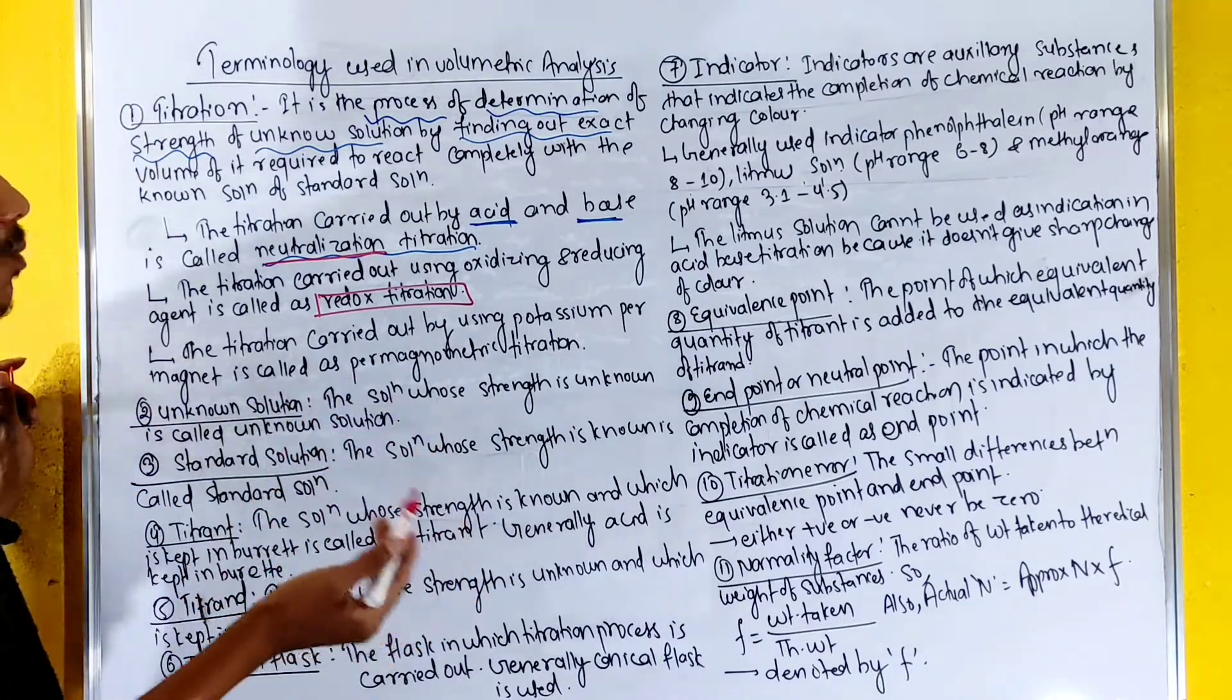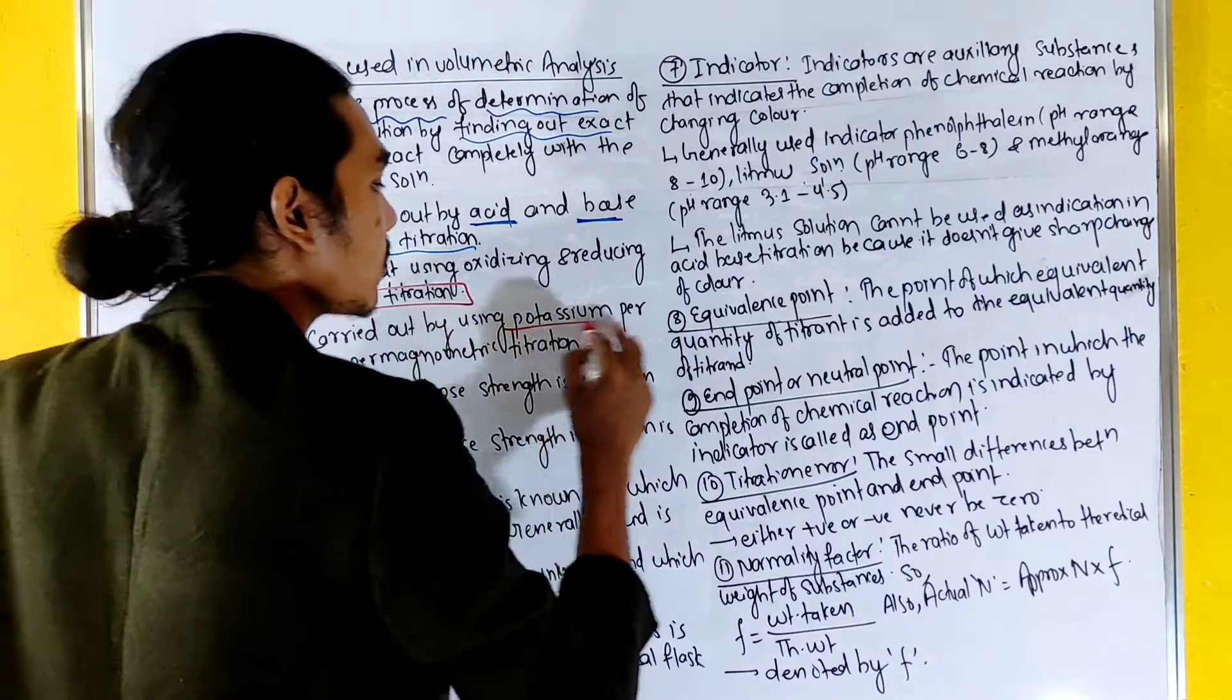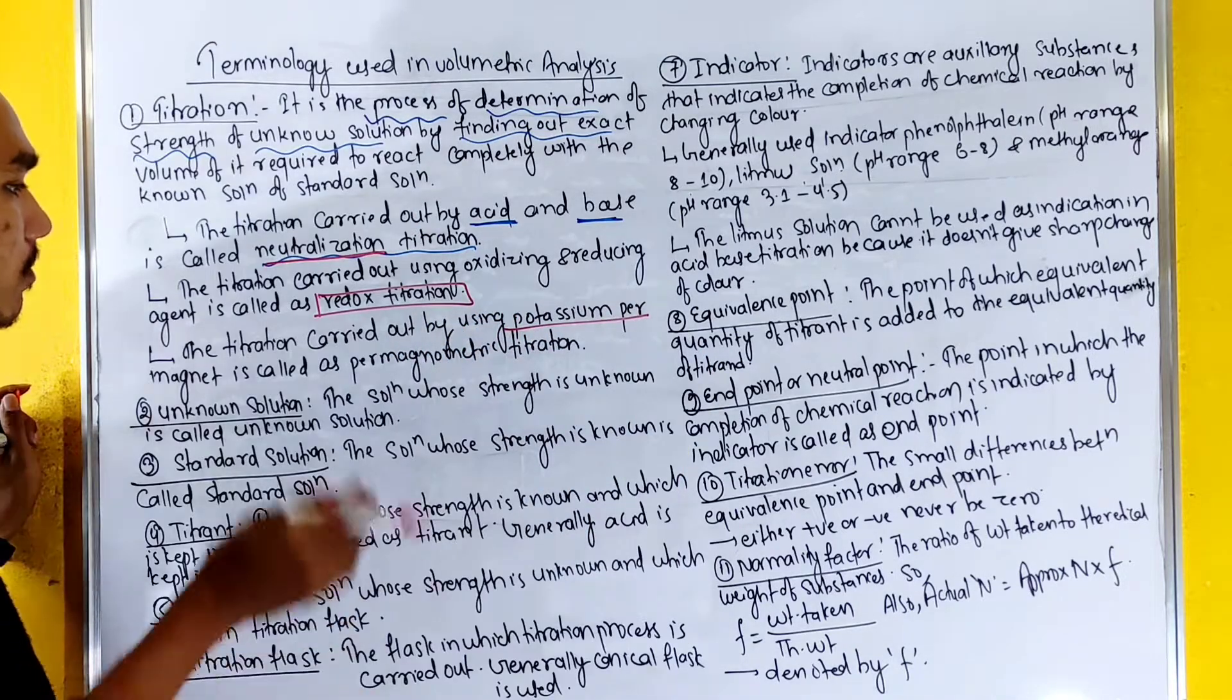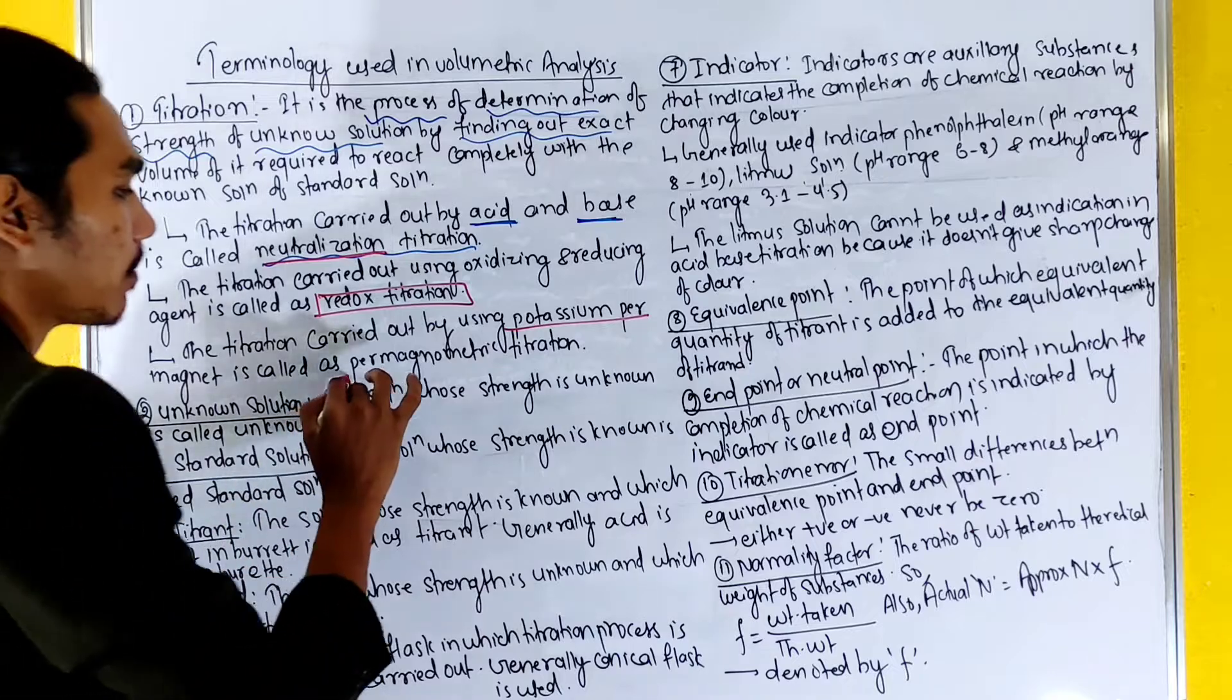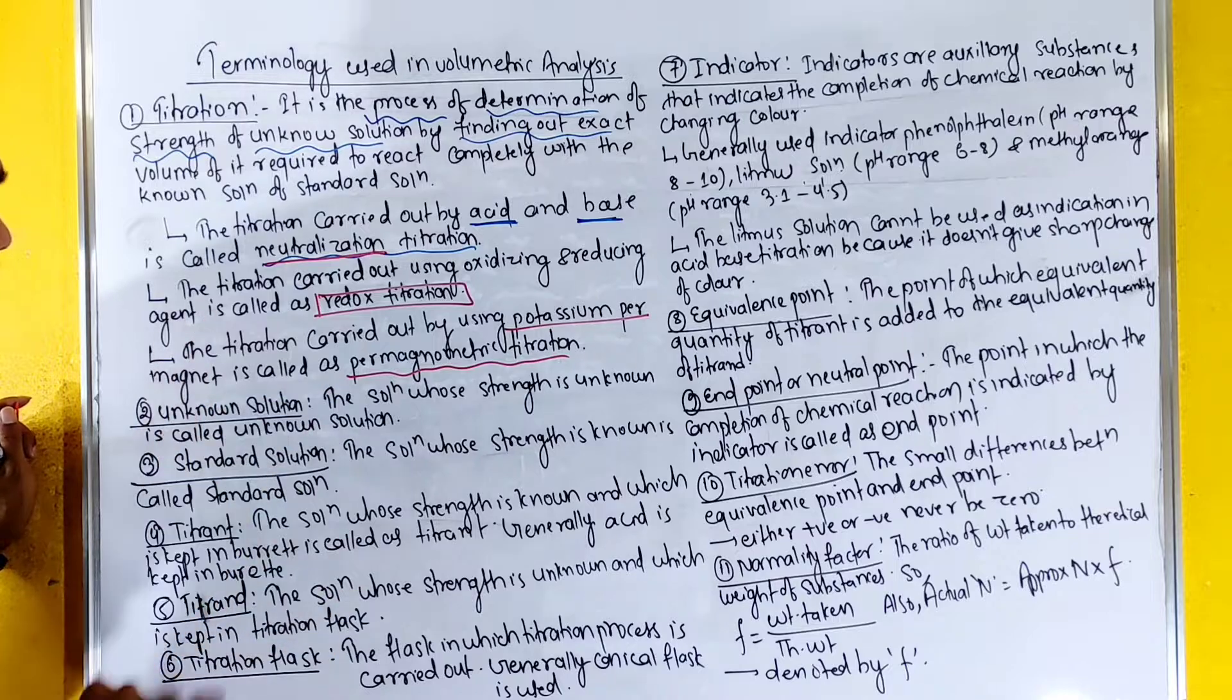Titration is carried out by using potassium permanganate. We have some form of permanganometric titration. That is the first type of titration. It is a simple concept.